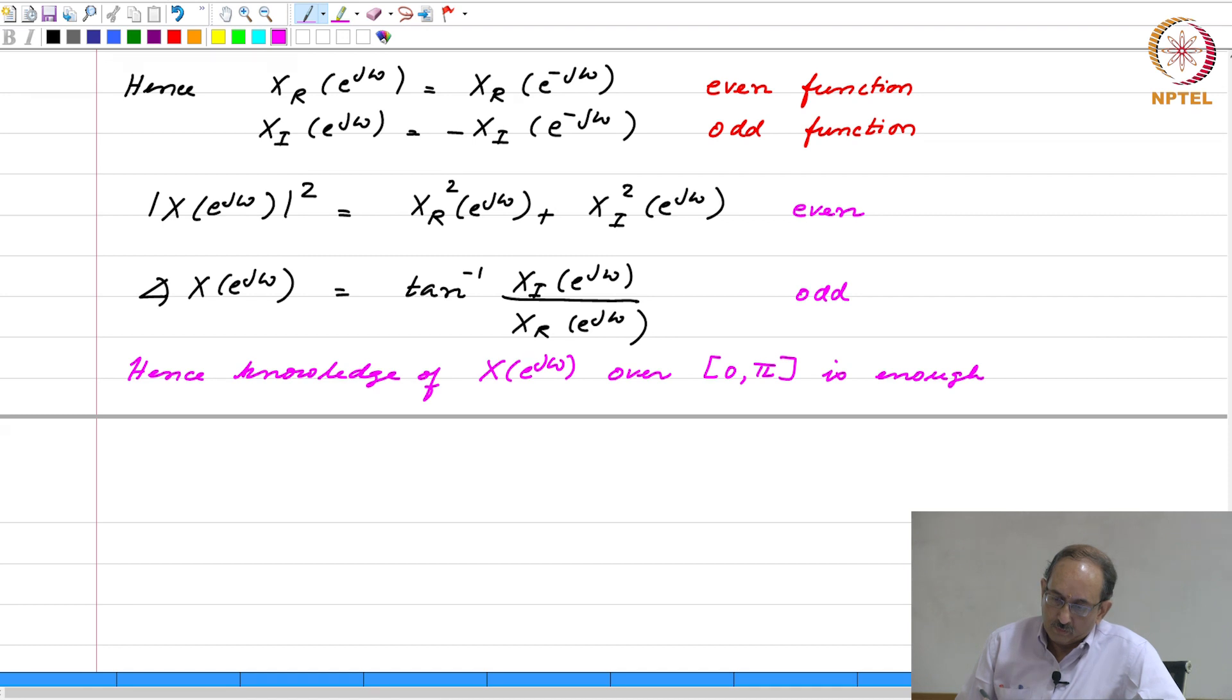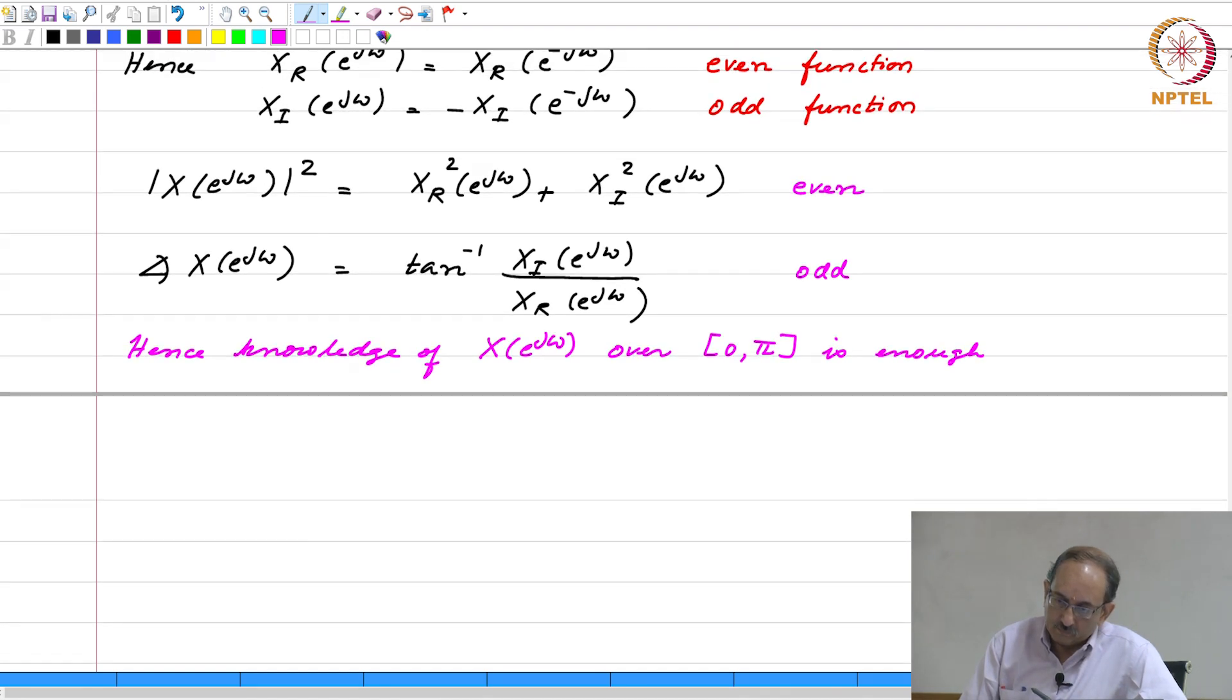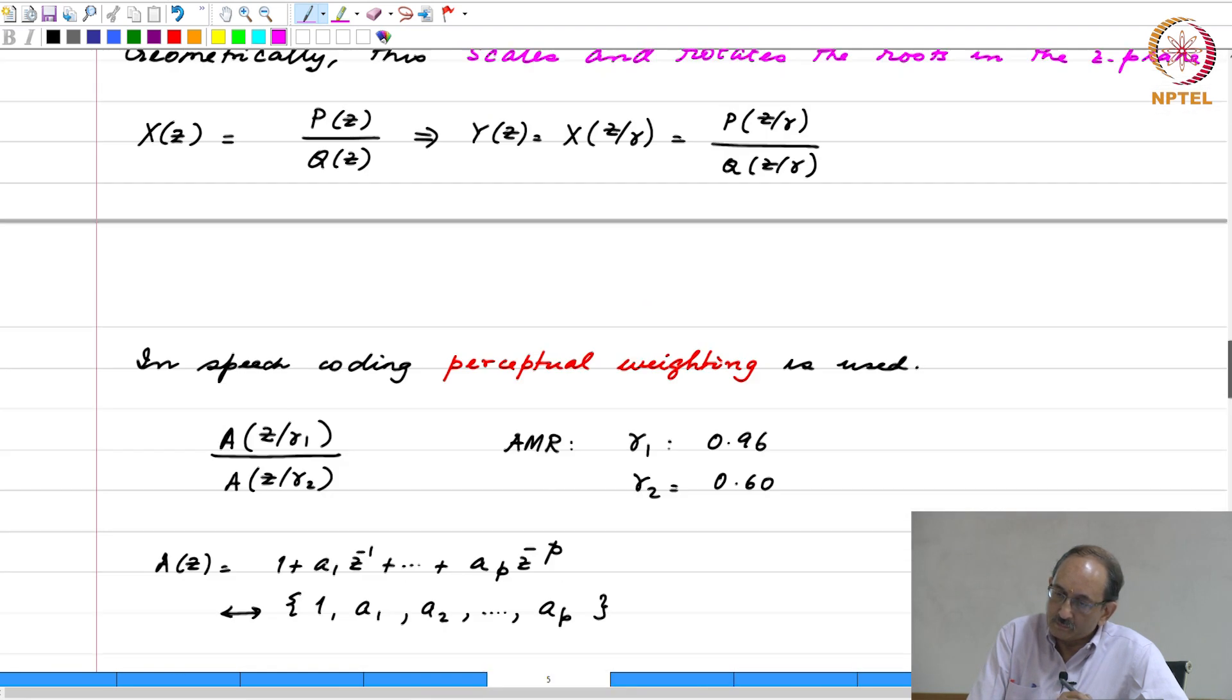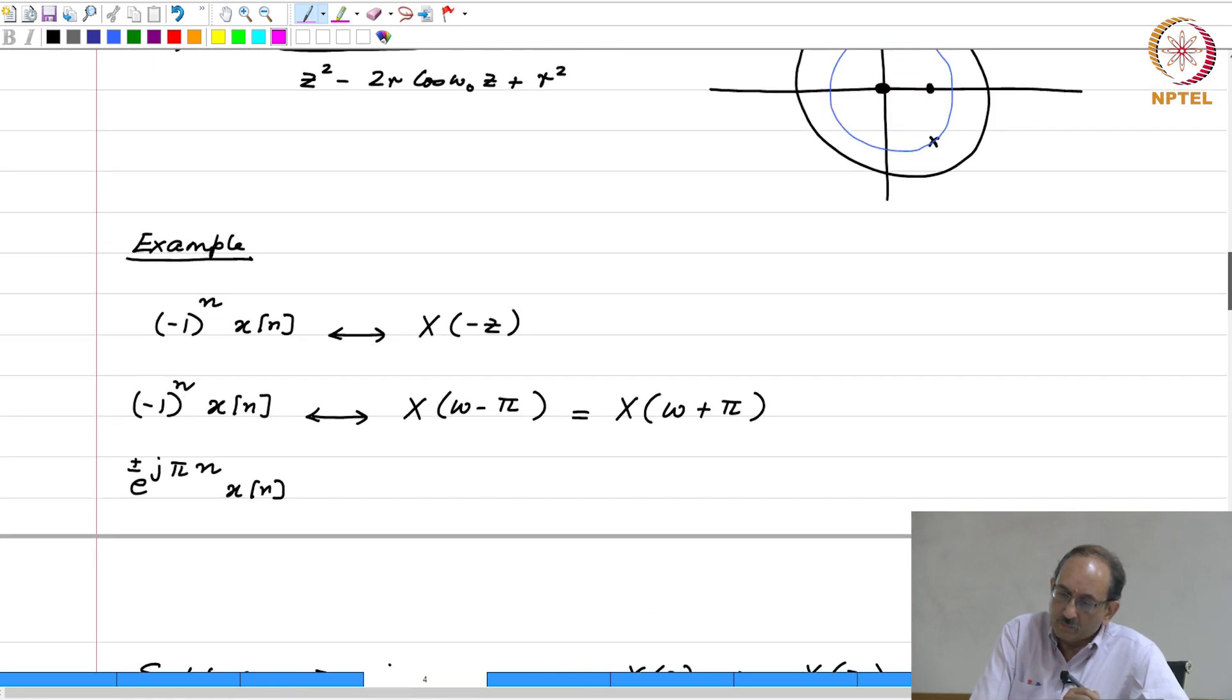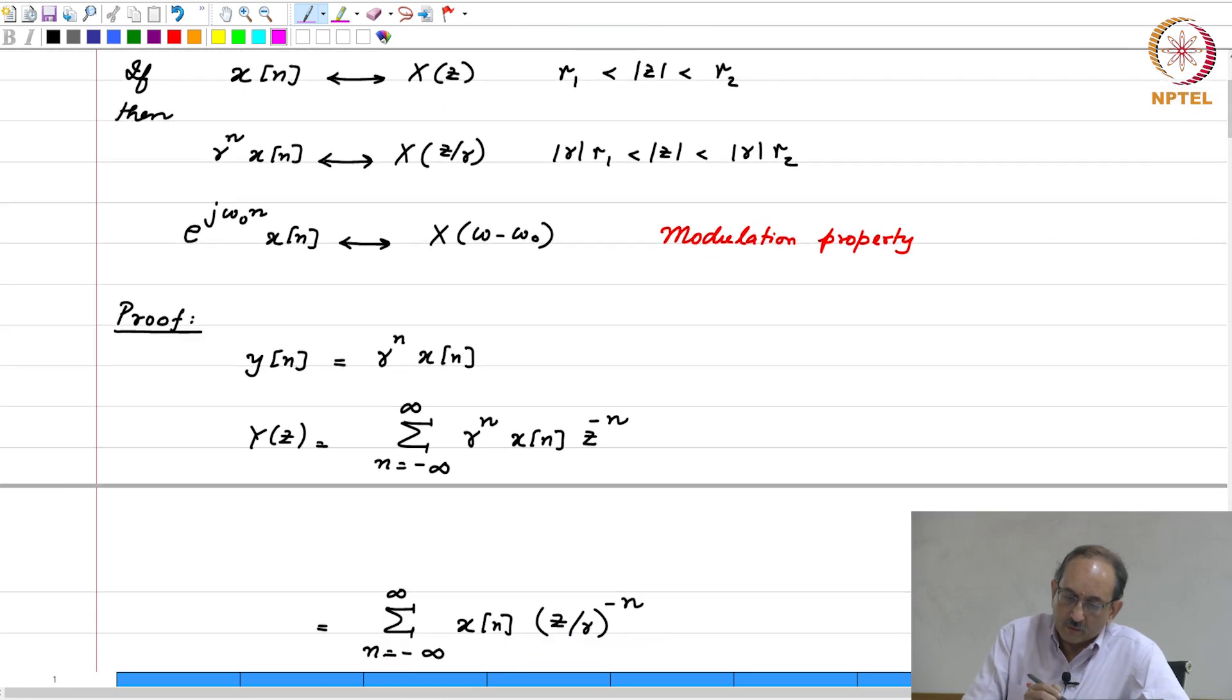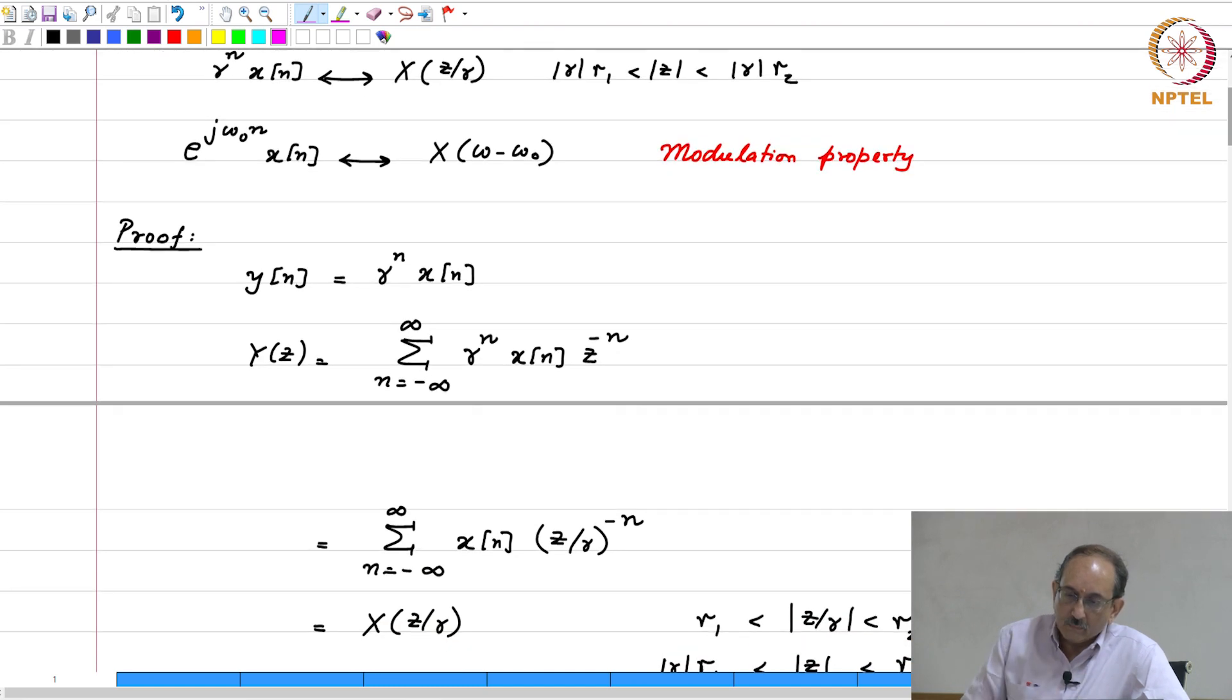So, one thing that this exponentiation, the modulation example I had shown here, typically this is given by this block diagram. So, you have x of n and you have e to the j omega n and this is y of n and this modulator is a linear system, this is time variant because of the time varying gain.